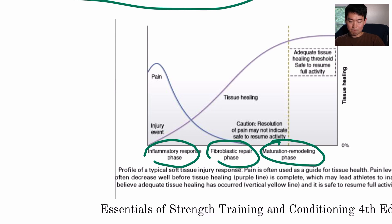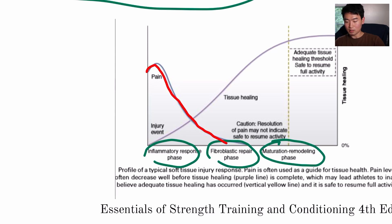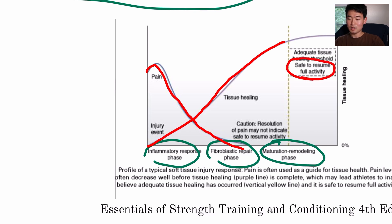Looking at the graph: pain is very acute in the beginning, then as we move into the fibroblastic repair phase and type 3 collagen gets deposited, pain slowly goes down. Tissue healing is the opposite — it takes time. The adequate tissue healing threshold is the sweet spot for safely resuming full activity, targeted at the maturation remodeling phase. We don't want to return to full activity too soon or too late.